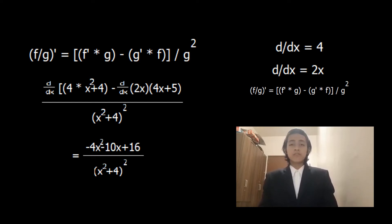Just multiply and divide it till no longer possible. After doing that, the answer will naturally come to negative 4x squared minus 10x plus 16 divided by x squared plus 4 times 2.